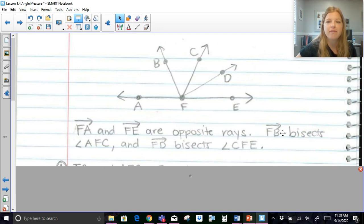Now, it says here that FB, ray FB bisects angle AFC. So FB bisects angle AFC. So what does that tell us? That tells us that this angle here is congruent to this angle here.